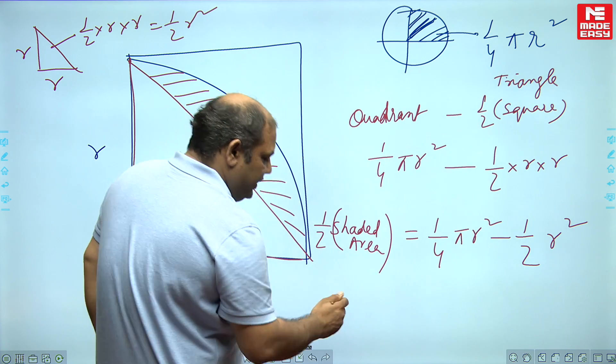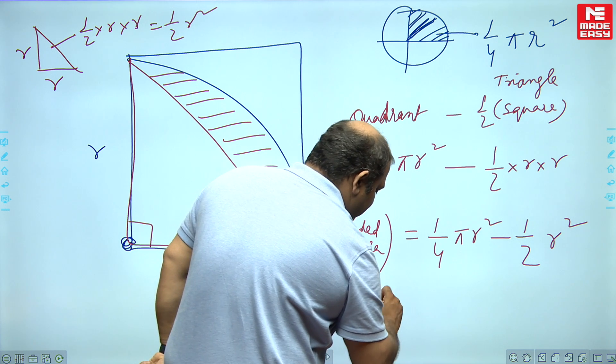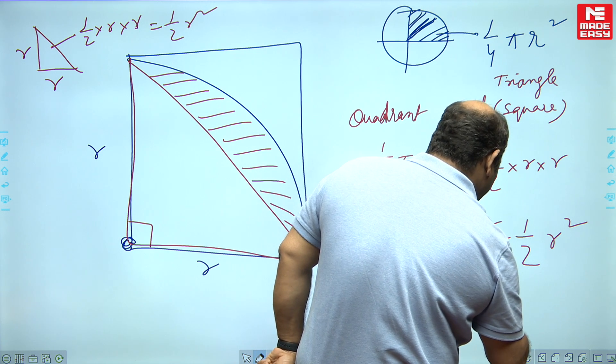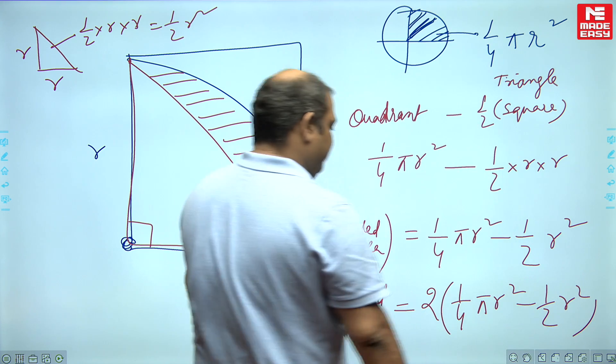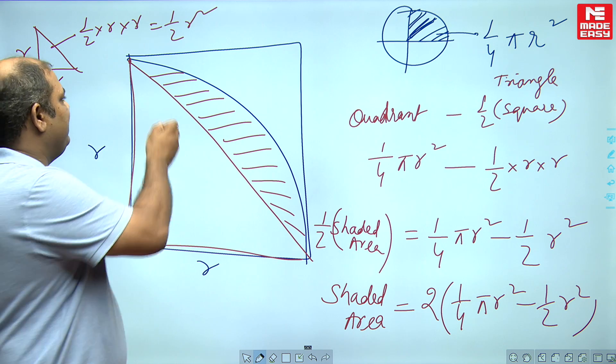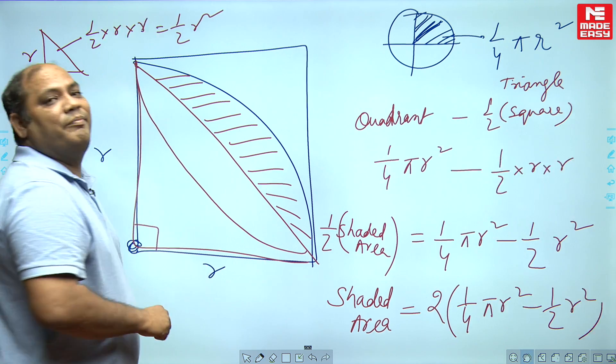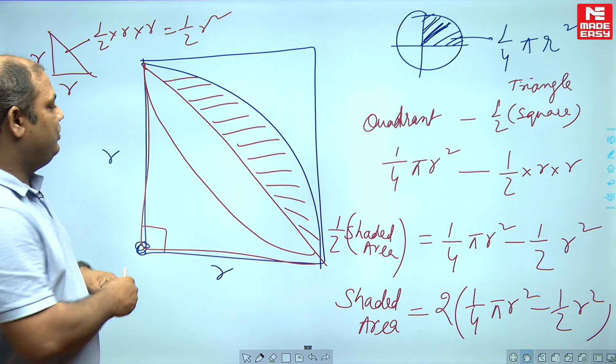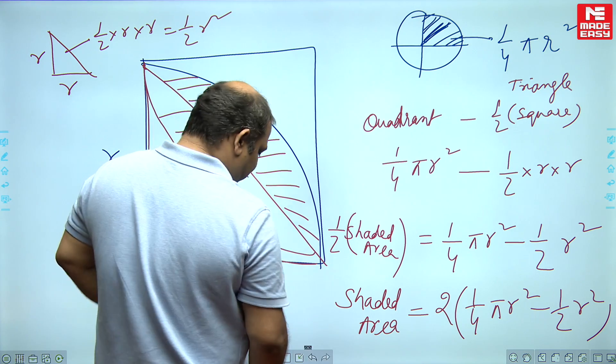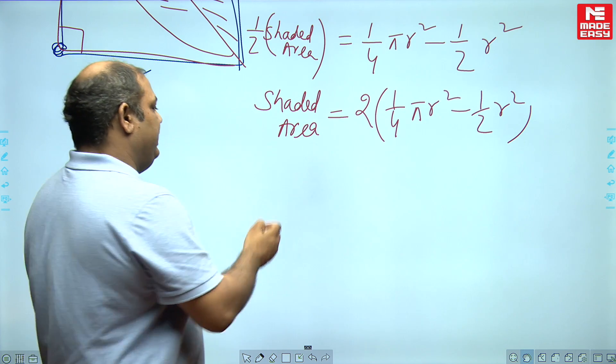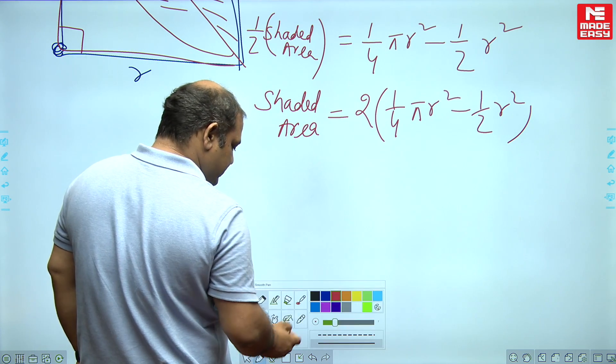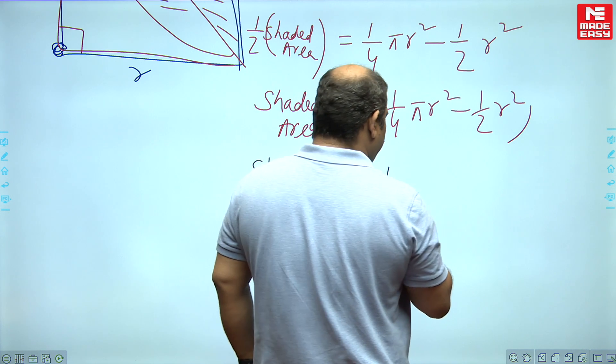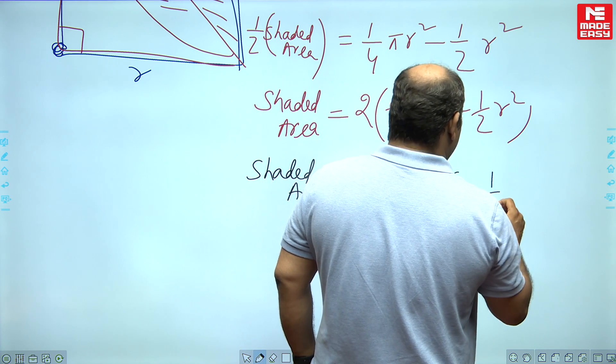And if I just double it, you will find the shaded area is twice of one fourth pi R square minus half R square. If I double the half shaded area, I get the full shaded area. So the shaded area will come out as half of pi R square minus R square.